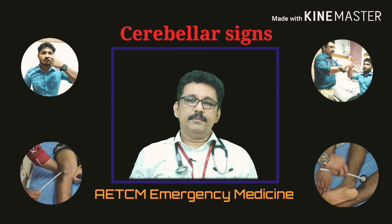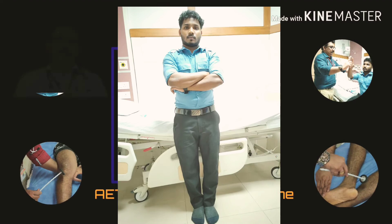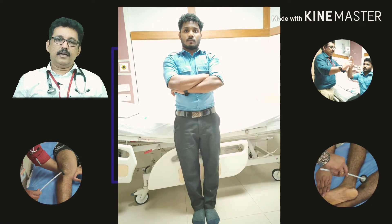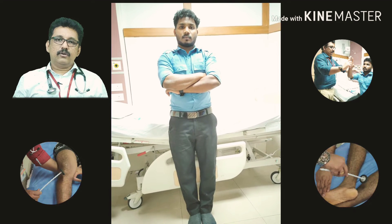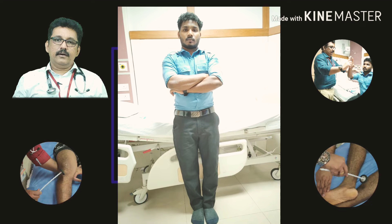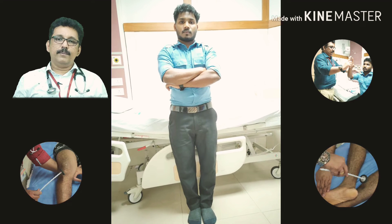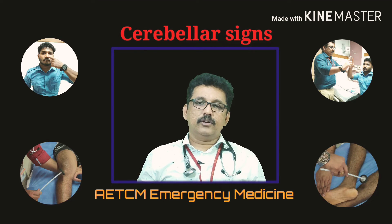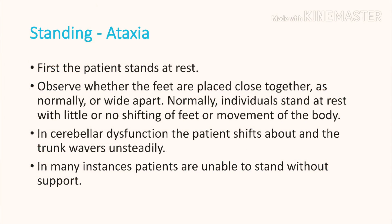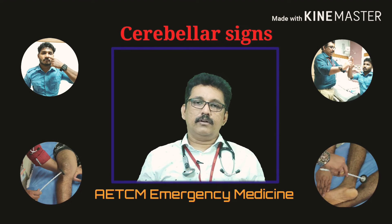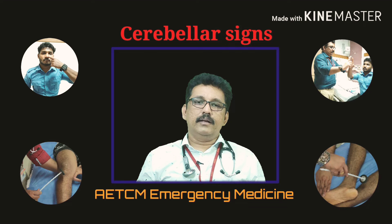The most important clinical finding in cerebellar disorder is ataxia. Ask the patient to stand erect with both feet together. A normal person will not fall to either side, but a patient with cerebellar disorder will not be able to maintain this and may fall to the left or right depending on the lesion. With vermis involvement or bilateral cerebellar involvement, the patient may fall forward or backward.